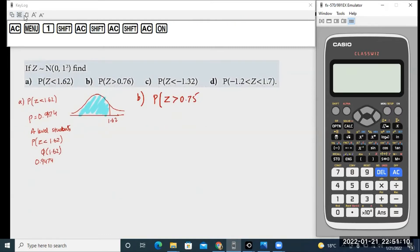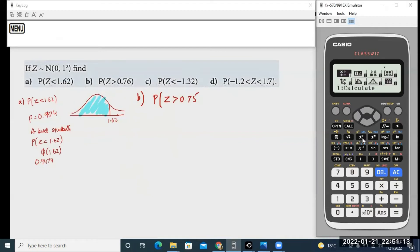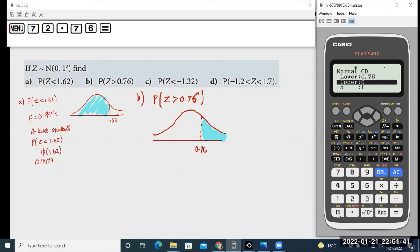Your calculator is capable of calculating all of this directly. I go to normal CD again. Notice that on this question, I have a low value of 0.76 for z and I'm asking you to calculate the probability of values above it. So in this case, the lower will be 0.76, the upper can be any value above 4, let's keep it 10. The other two things remain the same. You press and get your answer 0.2236.